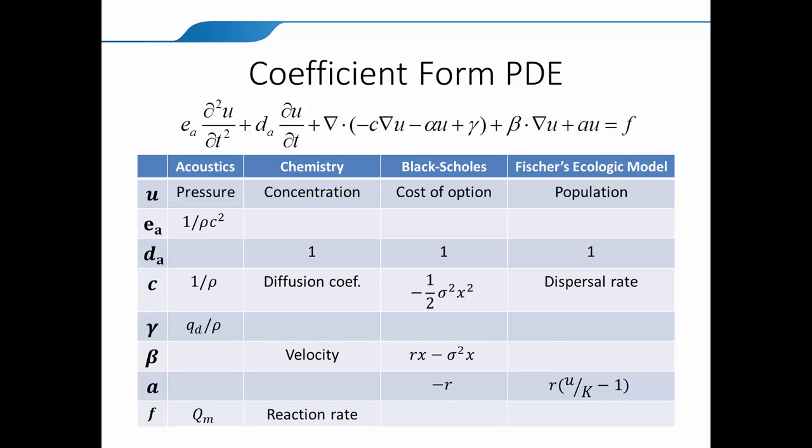For example, if you think of this template, a lot of these problems from acoustics, chemistry, finance, or population dynamics, you can fit them into this template. If you start with the acoustics equation, we don't have D, but Ea would be 1 over rho c squared, where rho is the density and c is the speed of sound.